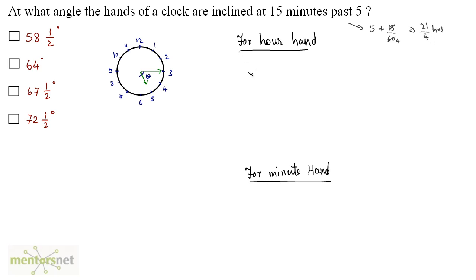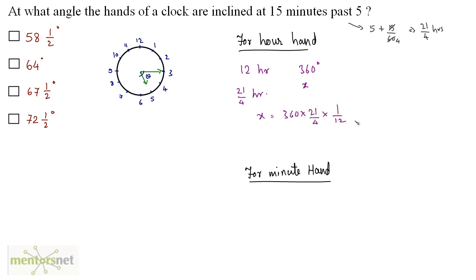Now let's calculate the angle traced by the hour hand. In 12 hours the angle traced is 360 degrees. So what will be the angle traced when it covers 21/4 hours? x is equal to 360 times 21/4 divided by 12. 12 times 30 is 360, 2 times 15 is 30, and 2 times 2 is 4, so we get 15 times 21/2, which equals 157.5 degrees. So this is the angle subtended by the hour hand.